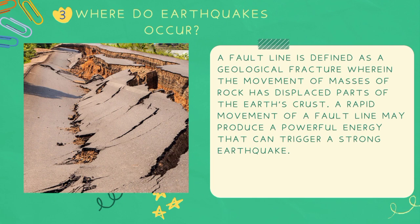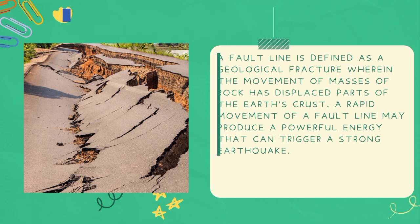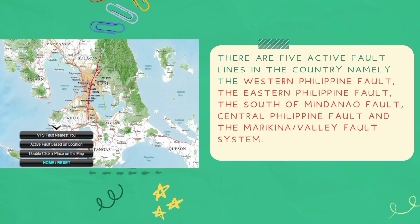Parts of the Earth's crust: A rapid movement of a fault line may produce powerful energy that can trigger a strong earthquake. There are five active fault lines in the Philippines, namely the Western Philippine Fault, the Eastern Philippine Fault, the South Mindanao Fault, the Central Philippine Fault, and the Marikina Valley Fault System.